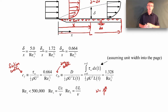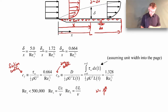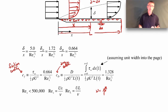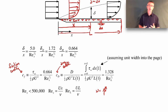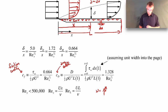Every time I've taught this course, when we ask people to find the drag acting on a plate due to the boundary layer, about 75% of the class tries to integrate the friction coefficient by hand. You can do that and it'll give you the right answer as long as you don't make mistakes. But it's much easier to just use the drag coefficient — we've already pre-integrated the friction coefficient for you. So if you're trying to find a drag force over some length, just use the drag coefficient.